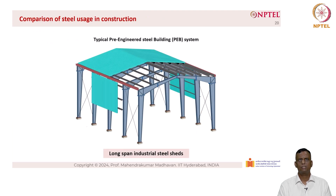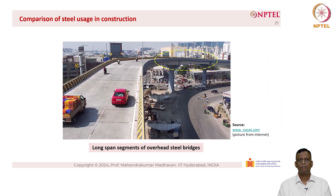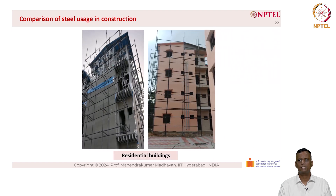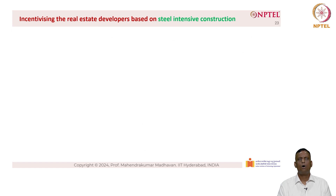Looking at the usage of steel in construction today in India, it is predominantly focused on pre-engineered building systems — essentially large sheds. At very selected locations where concrete cannot do the job, especially for curved girders, steel structures are used. Regular straight structures are still done using concrete, and only a very limited number of residential buildings use steel. The usage of steel in construction today is comparatively very low, which is an alarming sign.